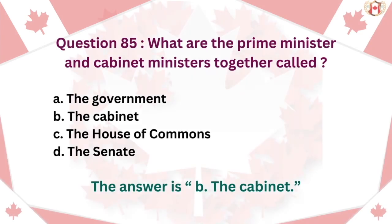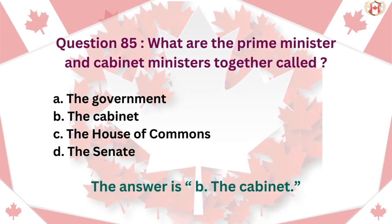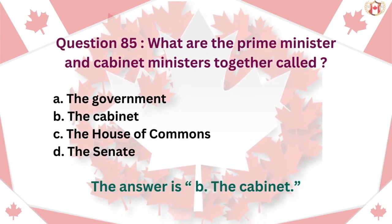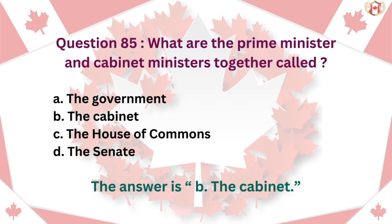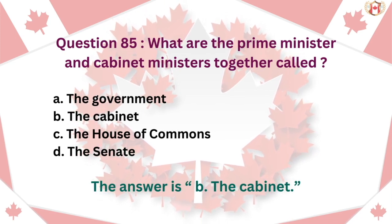Question 85: What are the Prime Minister and cabinet ministers together called? A. The government, B. The cabinet, C. The House of Commons, D. The Senate. The answer is B. The cabinet.